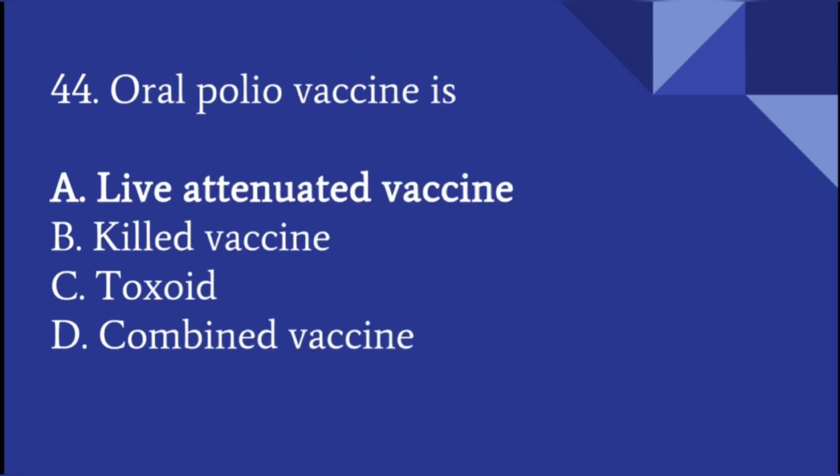Oral polio vaccine is a live attenuated vaccine, meaning the vaccine contains a live polio virus which is weak and not potent enough to cause disease in children after vaccination, but it is still live.